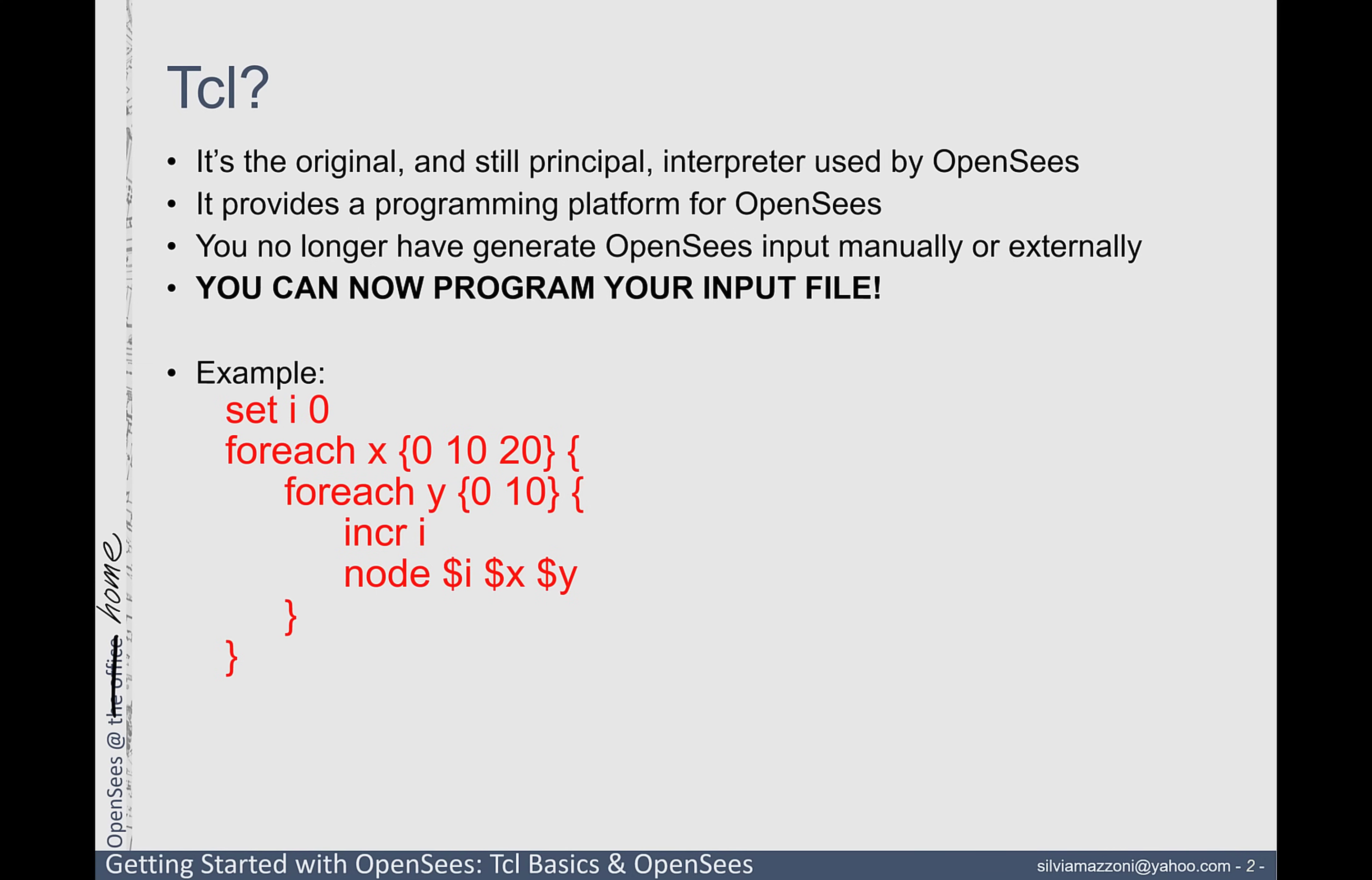You no longer have to generate OpenSees input manually by doing individual commands, but you can actually program your input file. Simple example, instead of just defining 10 lines of code to define all the different nodal coordinates, you can just write a simple loop where you can loop through your x-coordinates and y-coordinates and build your nodal coordinates this way.